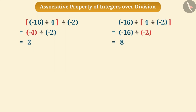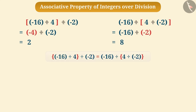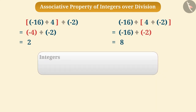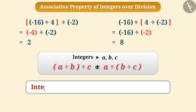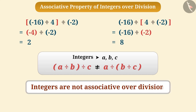That means we cannot group integers in any order to divide them. In general, for any three integers a, b, c: (a ÷ b) ÷ c ≠ a ÷ (b ÷ c). Therefore, integers are not associative over division.